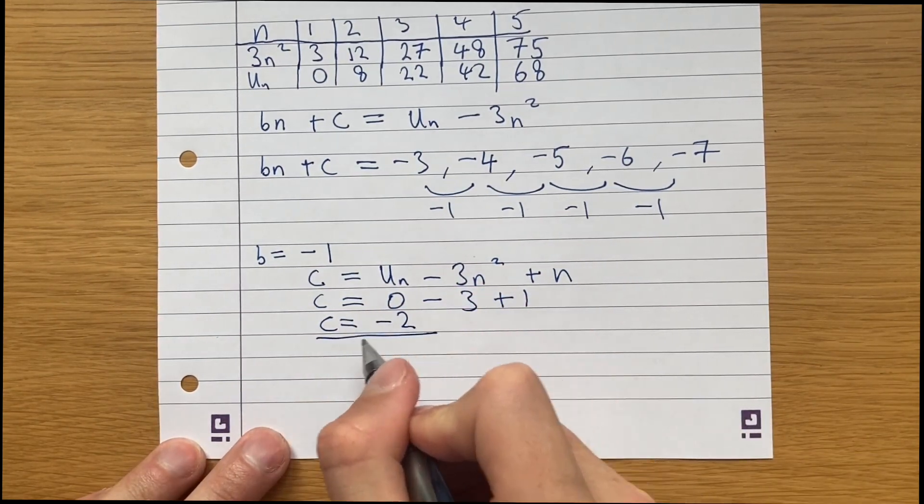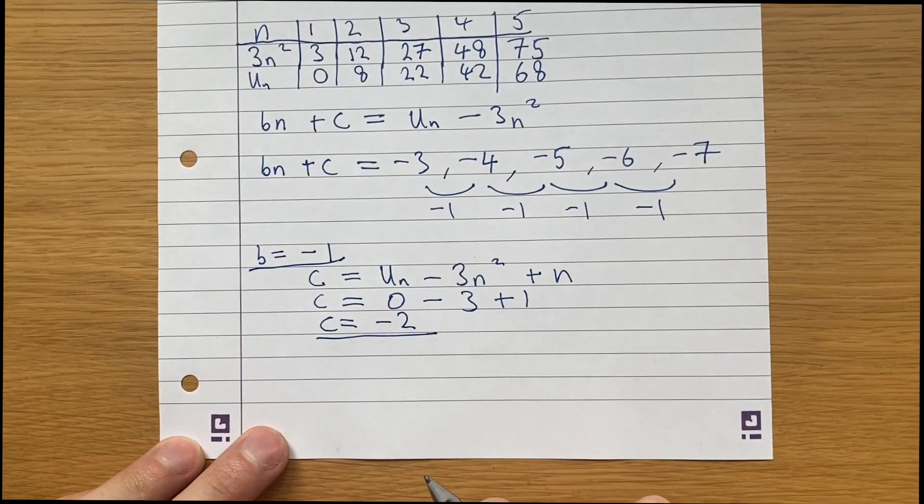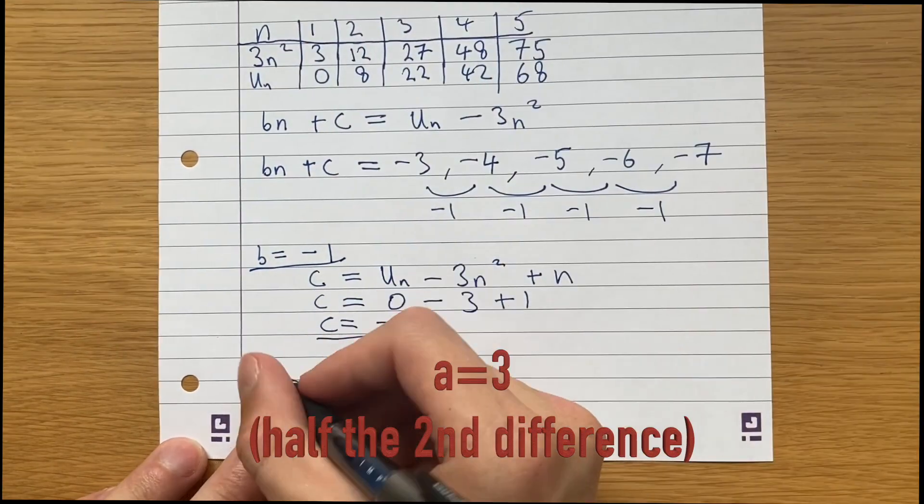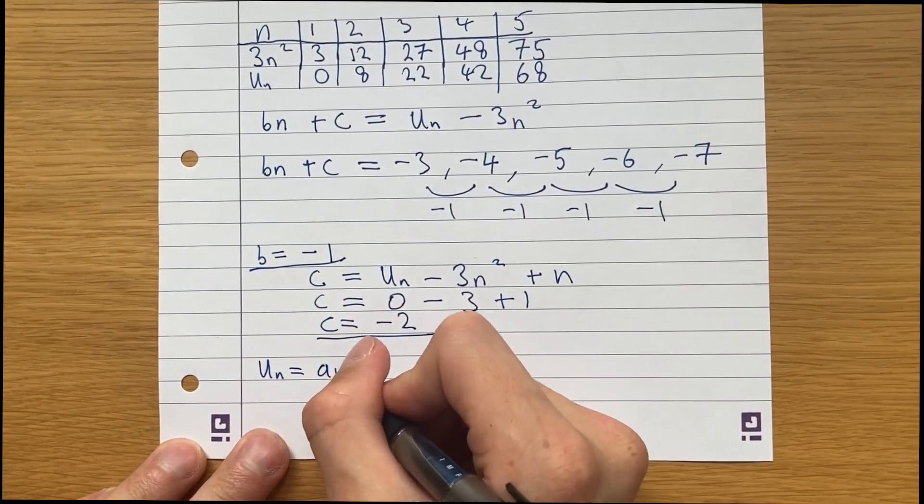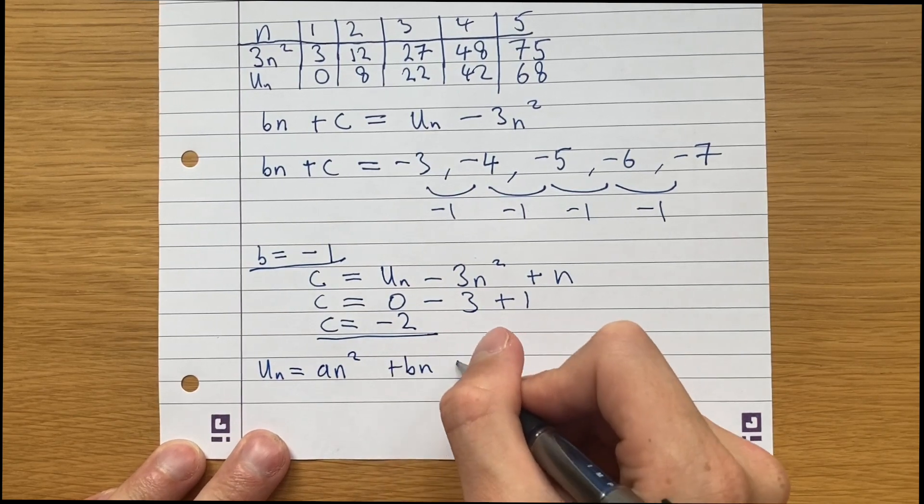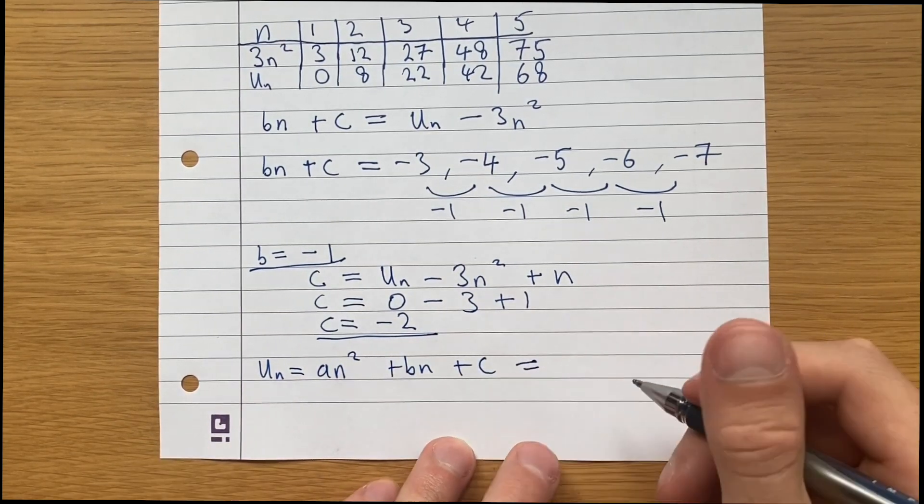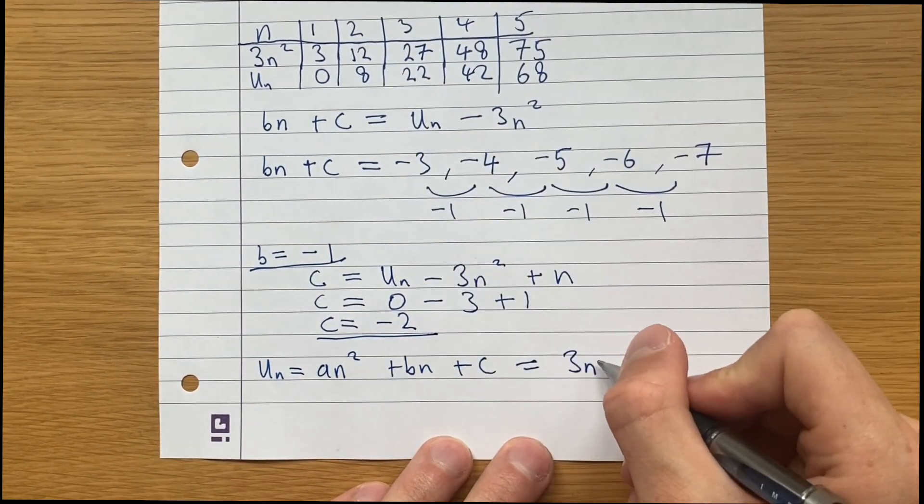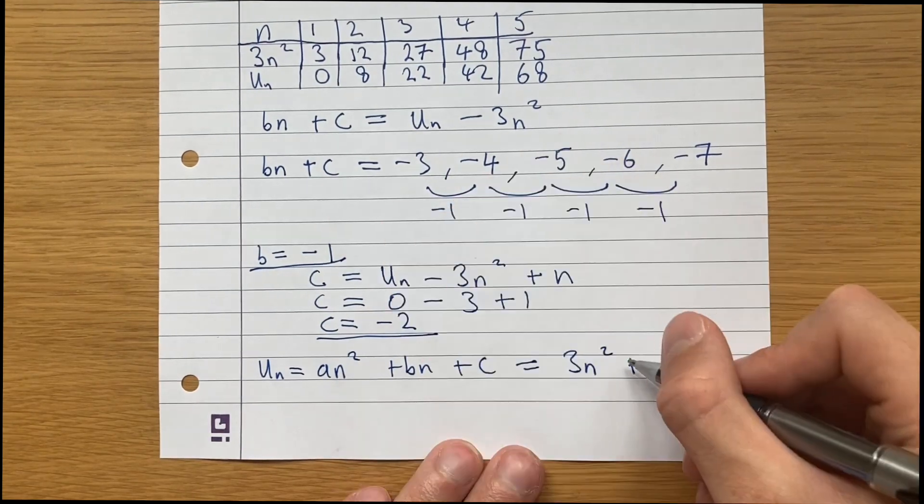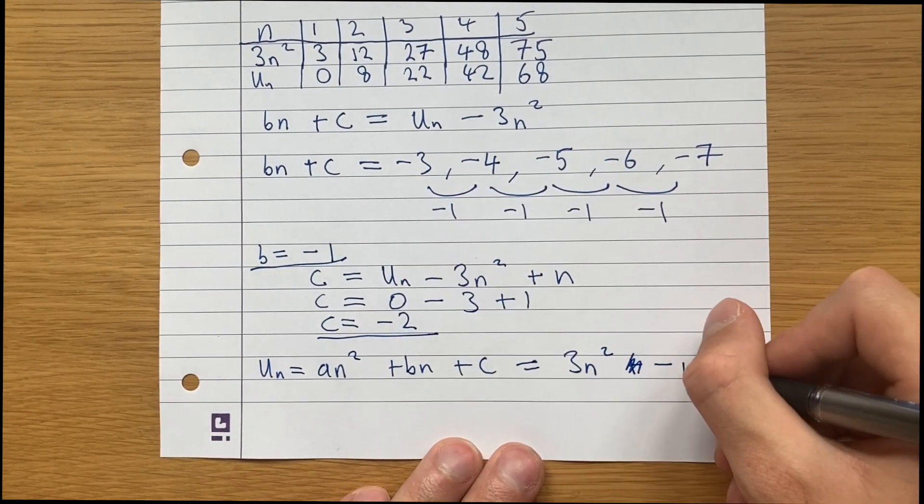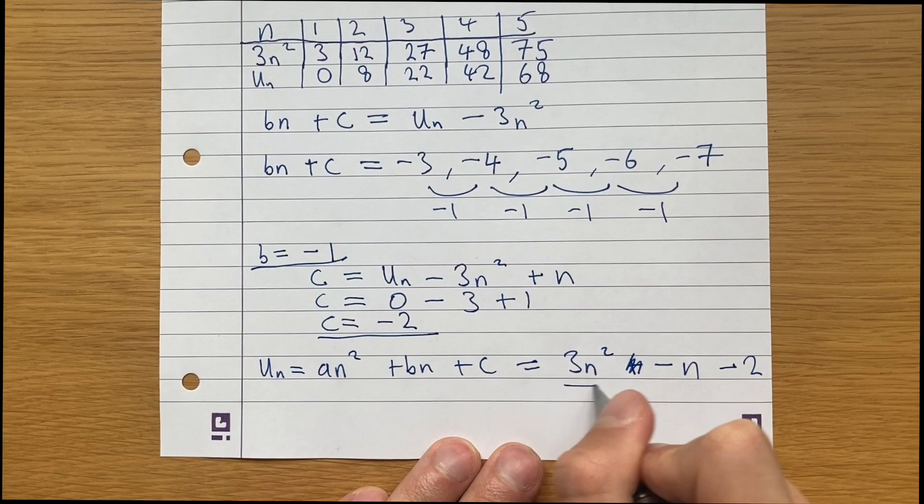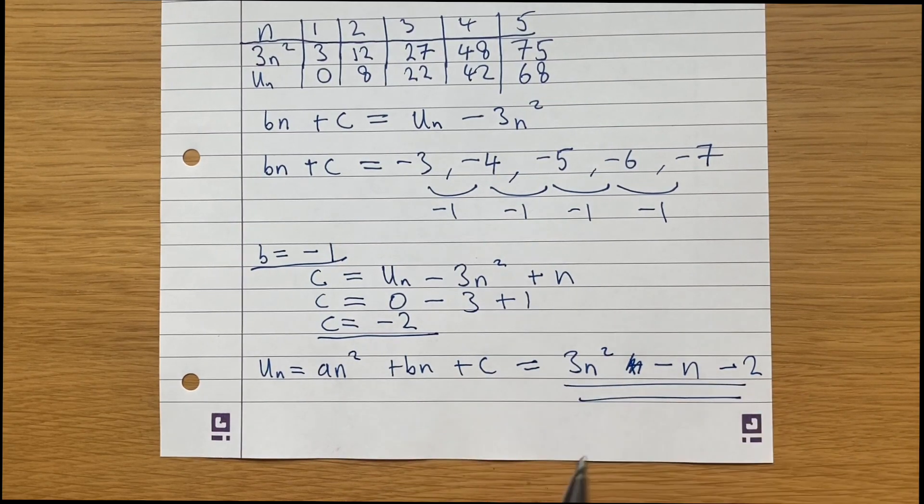So we've got our value for c, our value for b, and our value for a up here. Given that un is in the form an squared plus bn plus c, it is equal to a, which is 3n squared, plus, sorry, I should say minus n minus 2. And that's our formula for the nth term. Thanks for watching.